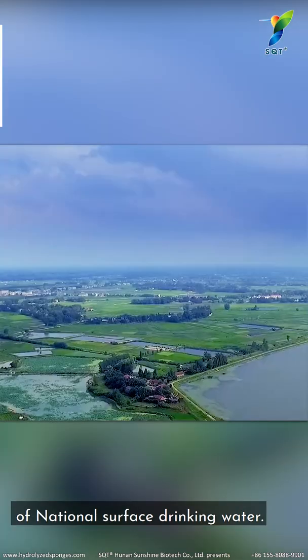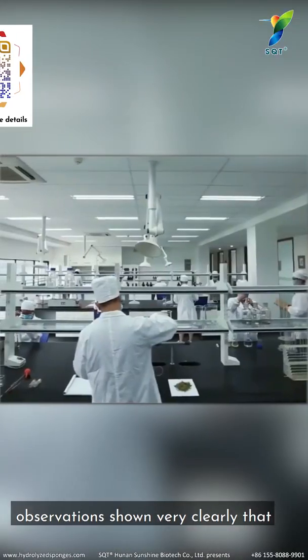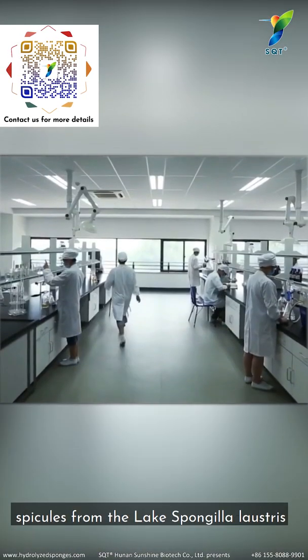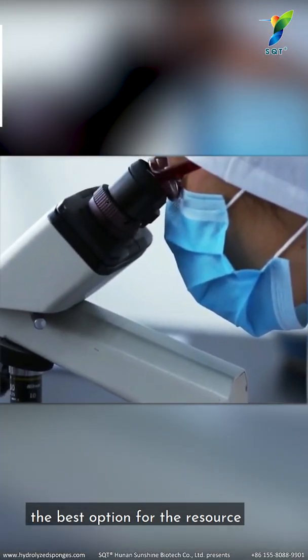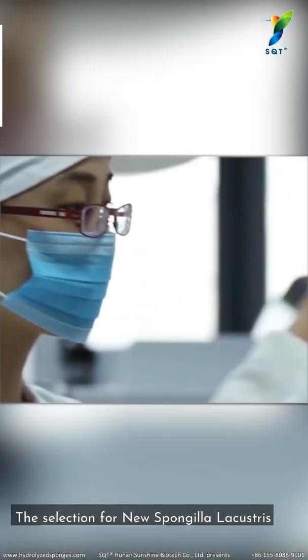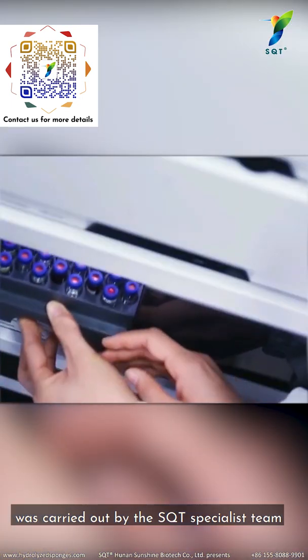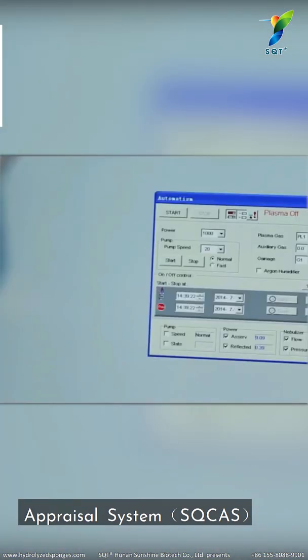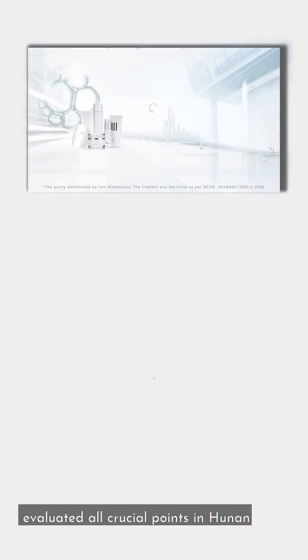Hunan Sunshine Biotech's present observations show very clearly that the speckles from Lake Spongilla Lacustris are the best option for the raw material resource of SQT Freshwater Spicule 2.0. The selection for new Spongilla Lacustris was carried out by the SQT specialist team as per SQT quality control and appraisal system, evaluating all crucial points in Hunan.